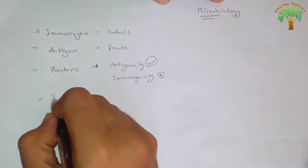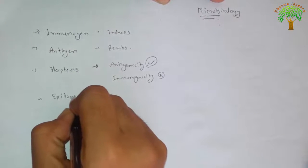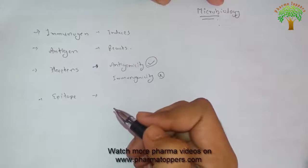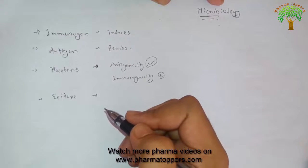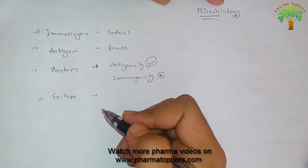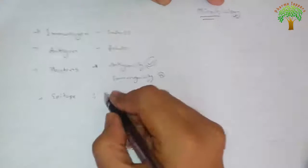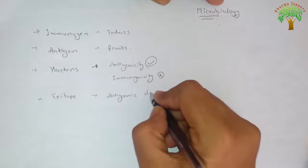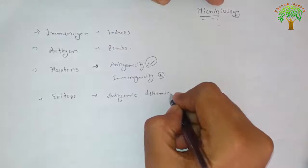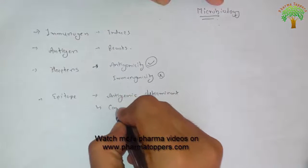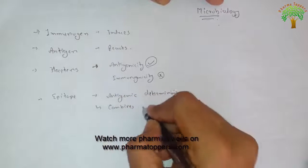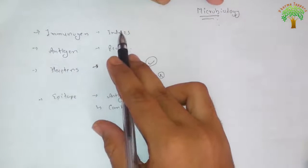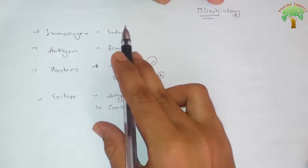Next is the epitope, also known as the antigenic determinant. It is a portion of the antigen which combines with the products of the specific immune response — it is the antigenic determinant which combines with the products of the antigenic response.